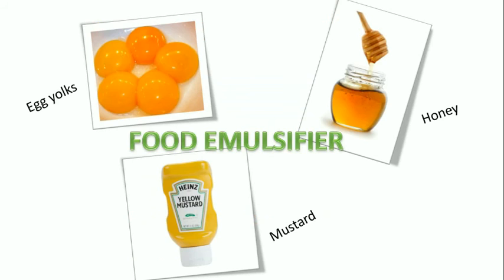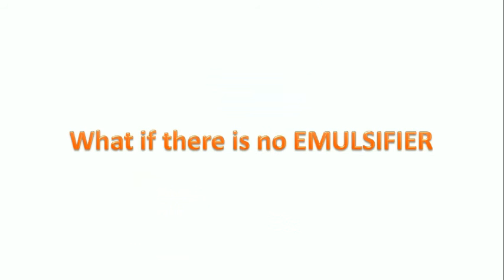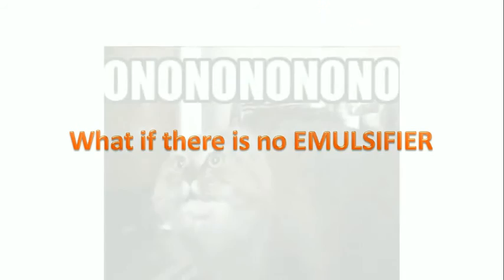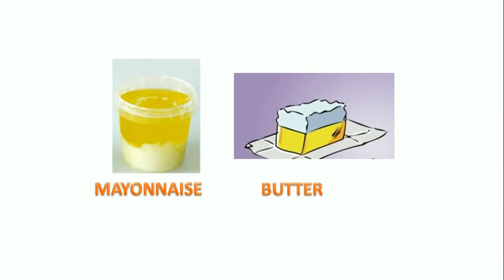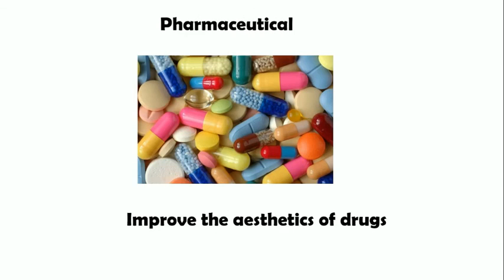These are the common examples for the food emulsifier. And what if there is no emulsifier? These are how our mayonnaise and butter will look like. Enjoy! Emulsions are widely used in chemical industries such as cosmetics, agriculture and pharmaceutical.